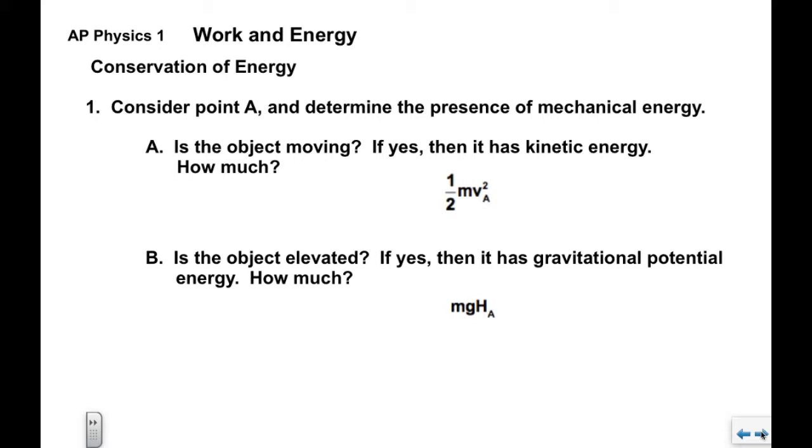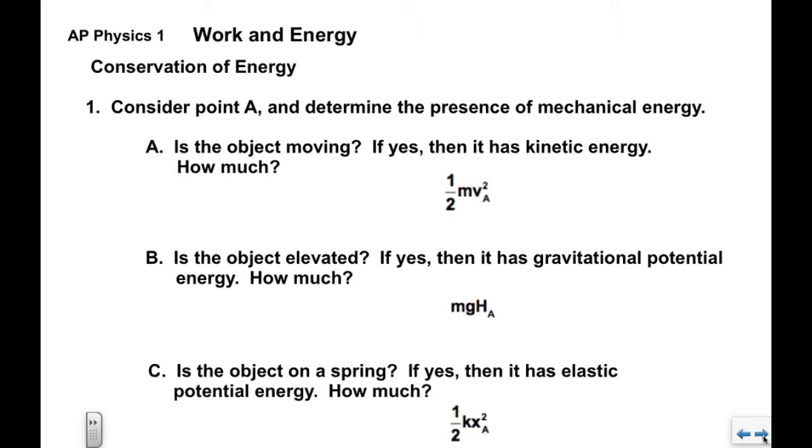If the object is above that point then we would say it has gravitational potential energy. We know that how much is mgh. We specify mgh sub a to indicate when and where we're talking about. The last one is if the object is on a spring or a rubber band or something that's stretched or compressed, if the answer is yes then we would say it has elastic potential energy. We know that how much is one half kx squared. We'll specify one half kx sub a squared to indicate point A.